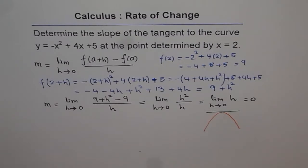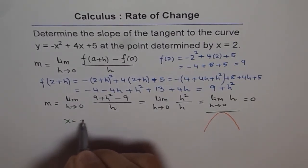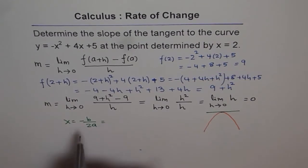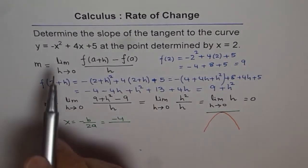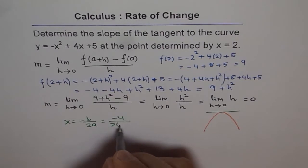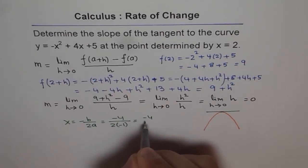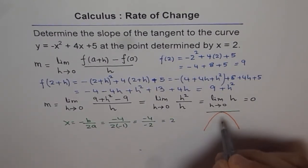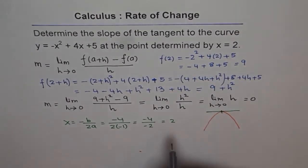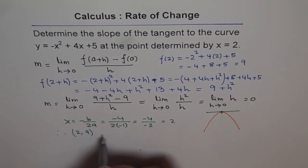You can verify this. The vertex is normally at x = -b/2a. So if you do -b/2a = -(4)/(2×-1) = -4/-2 = 2. At x = 2, we do have a vertex. So the point (2,9) is the vertex.